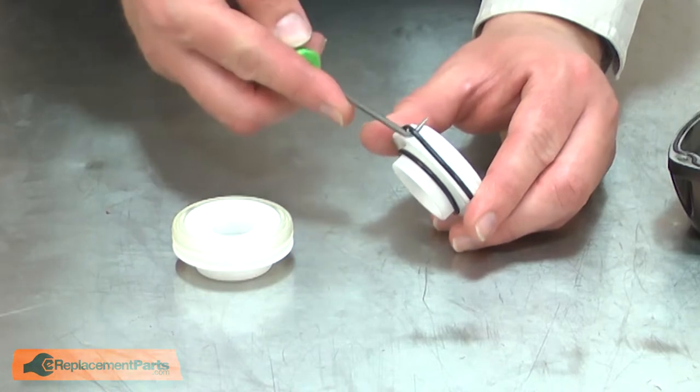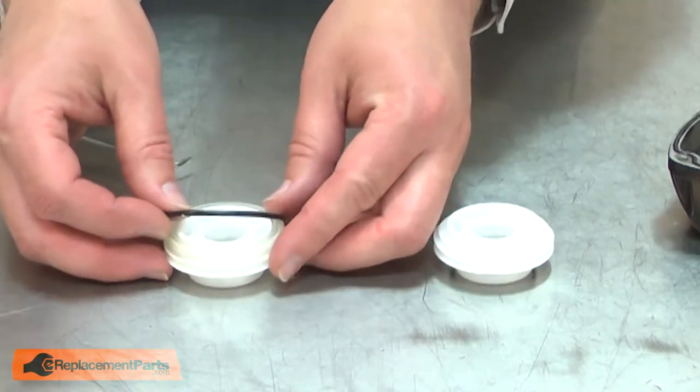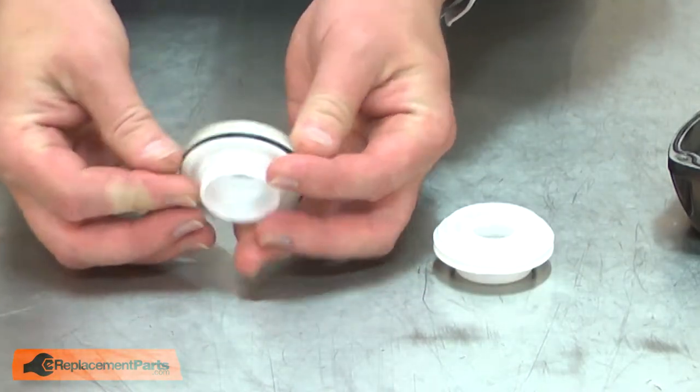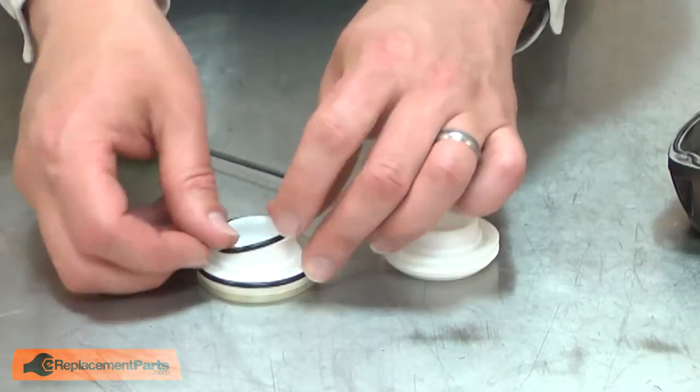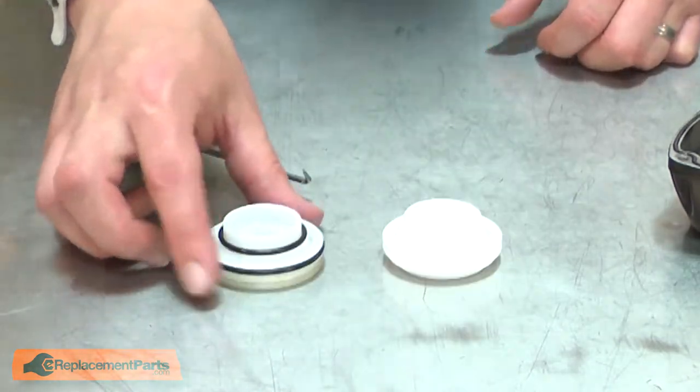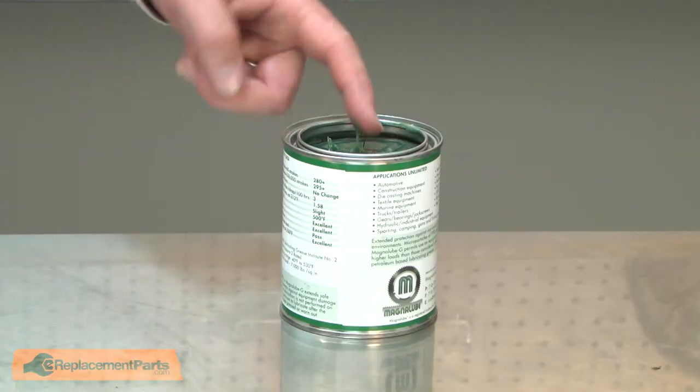Next, the large O-ring and the small O-ring. I'll apply a little grease to both of these O-rings before I reinstall.